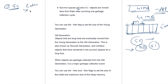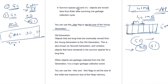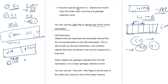From Eden space, all surviving objects are moved to S0. In the second garbage collection cycle, all objects from S0 will be shifted to S1 using the mark-and-sweep method. You can use the -Xmn flag to set the size of the young generation. The young generation includes Eden space and the survivor spaces S0 and S1. Old generation and permanent generation come under the old generation.